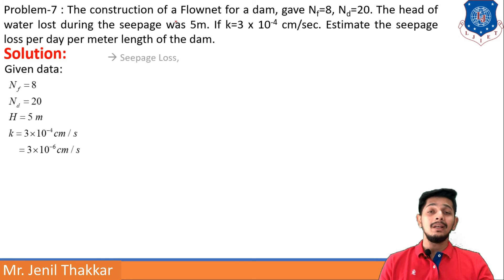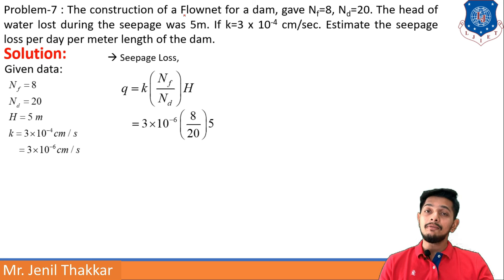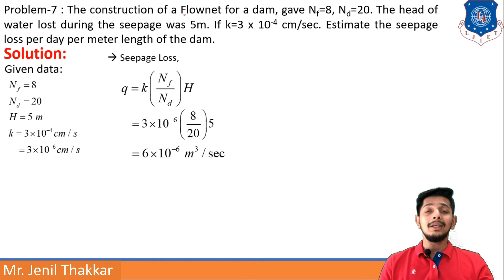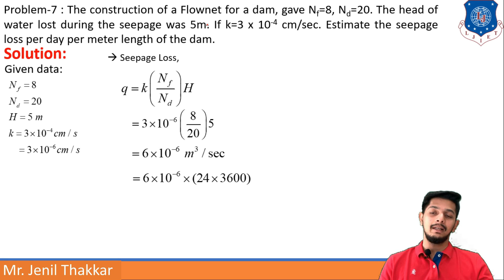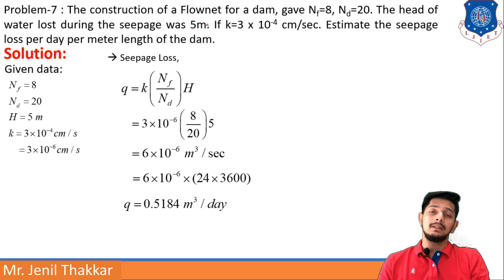The formula for seepage loss is q = k·(Nf/Nd)·H, where Nf/Nd is sometimes called the shape factor. Putting k, Nf, Nd, and H, q = 6×10⁻⁶ m³/s. Converting to per day per meter length of dam, q = 0.5184 m³/day. That concludes this chapter on permeability and seepage numericals. More in the next videos, thank you.